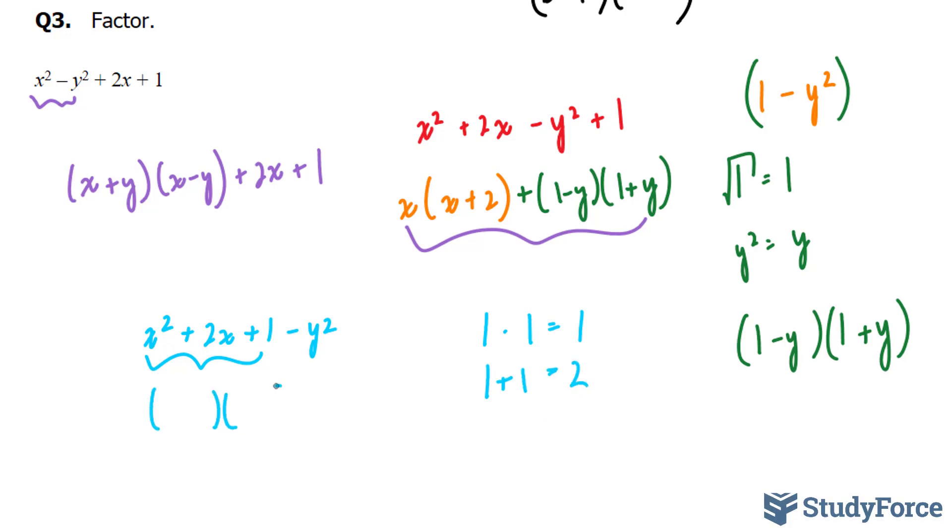So I can break this down into two brackets. x plus 1 and x plus 1 minus y squared. This expression, this expression, and this expression are three possible options to factoring the original.